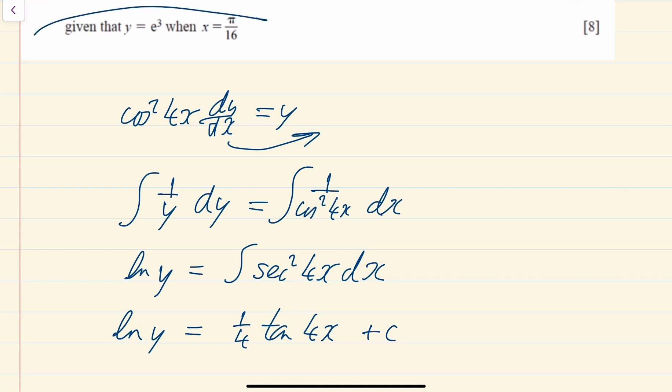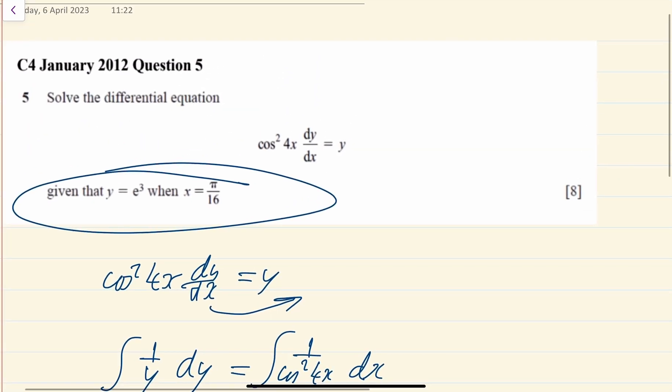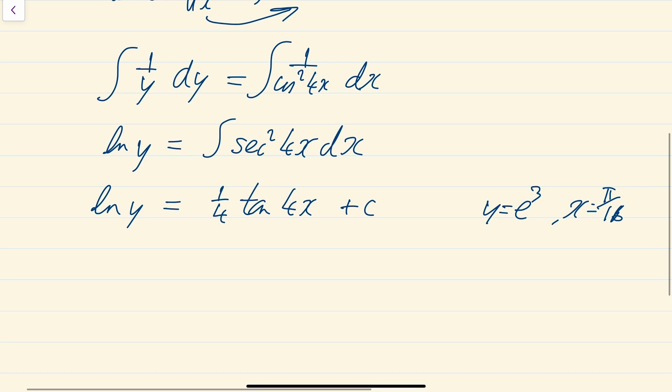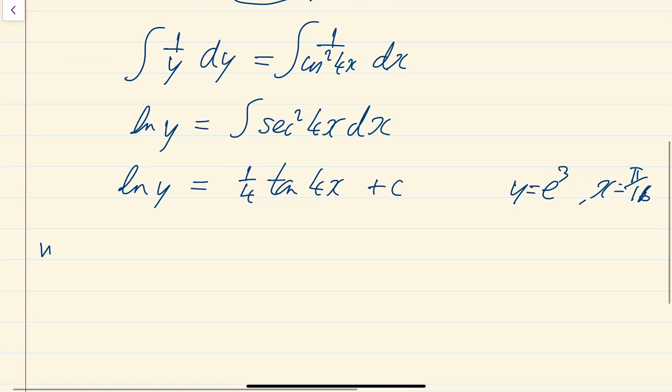OK, we are told here, it says solve the differential equation. So that means you've got to find basically y equals something like that. So you're told that when y equals e to the power of 3, your x equals pi over 16. So we're going to put that in here. So that's what we've got. So when y equals e to the power of 3, your x equals pi over 16.